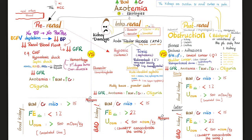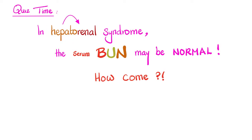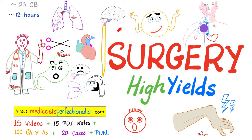Quiz time: In hepatorenal syndrome — a liver disease that causes kidney disease — serum BUN may be normal. Can you explain why? Leave your answer in the comments; the answer key will be in the next video. Upcoming topics include the stages of acute tubular necrosis, diagnosis and management of AKI, and chronic kidney disease leading to end-stage renal disease. For urology topics, check out the surgery high-yields course at medicosisperfectionalis.com.